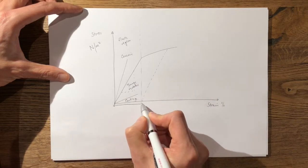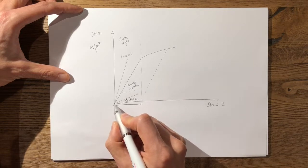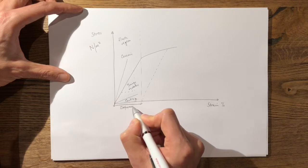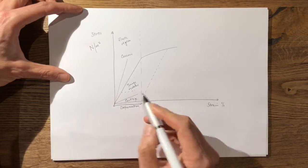It returns to its permanently deformed length and the distance between here and here gives you an idea of the permanent deformation.